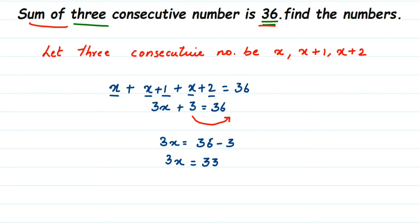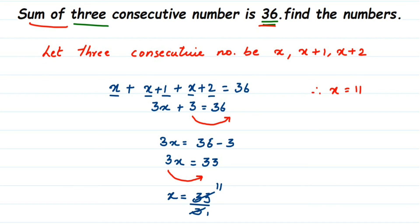We want only the x value, so we transpose the three — since it is in multiplication, it goes to division on the other side. So x equals 33 divided by three. Cancelling: three elevens are 33, so therefore x is equal to 11. The first number is 11.